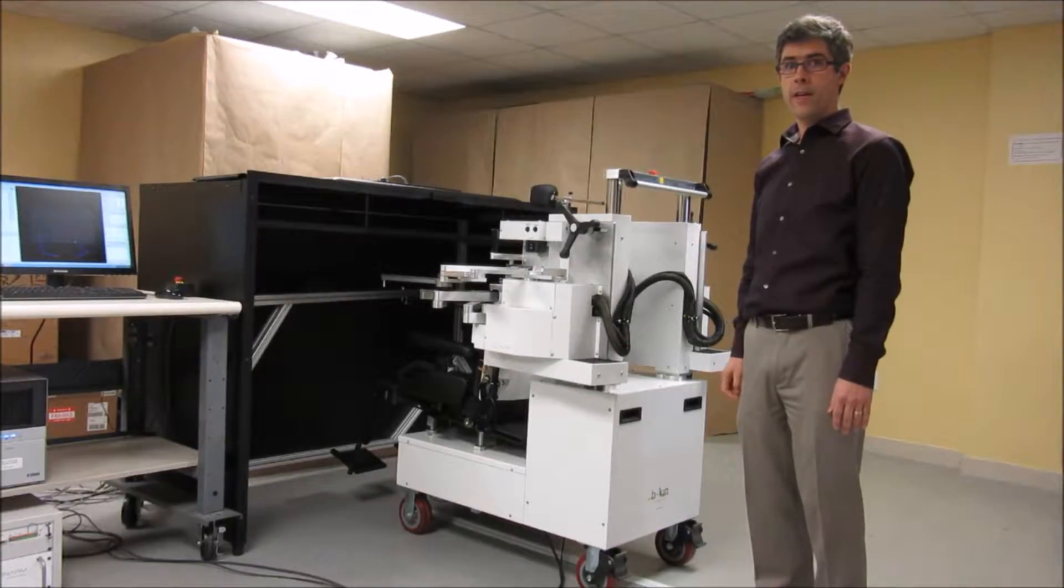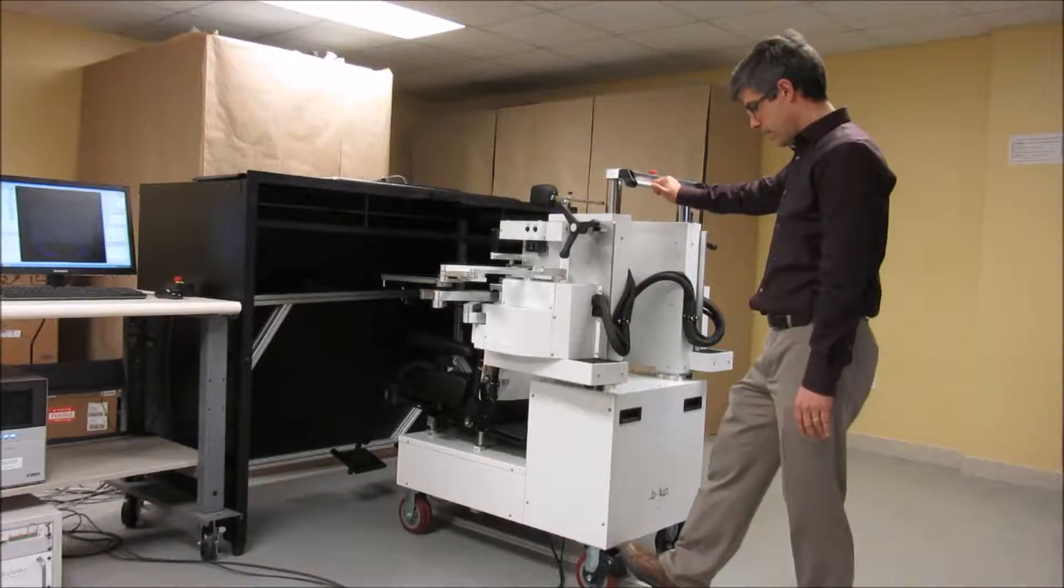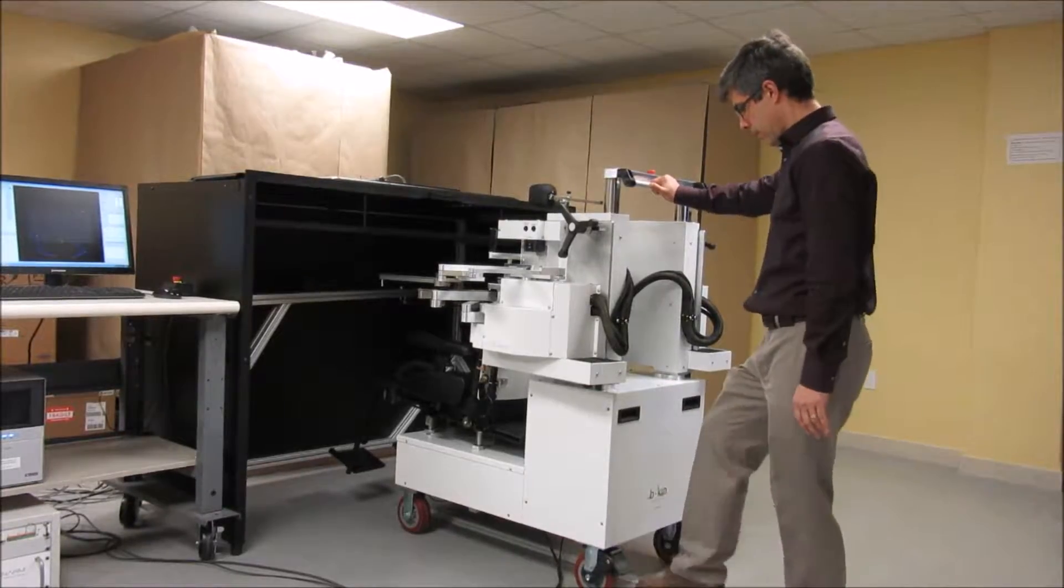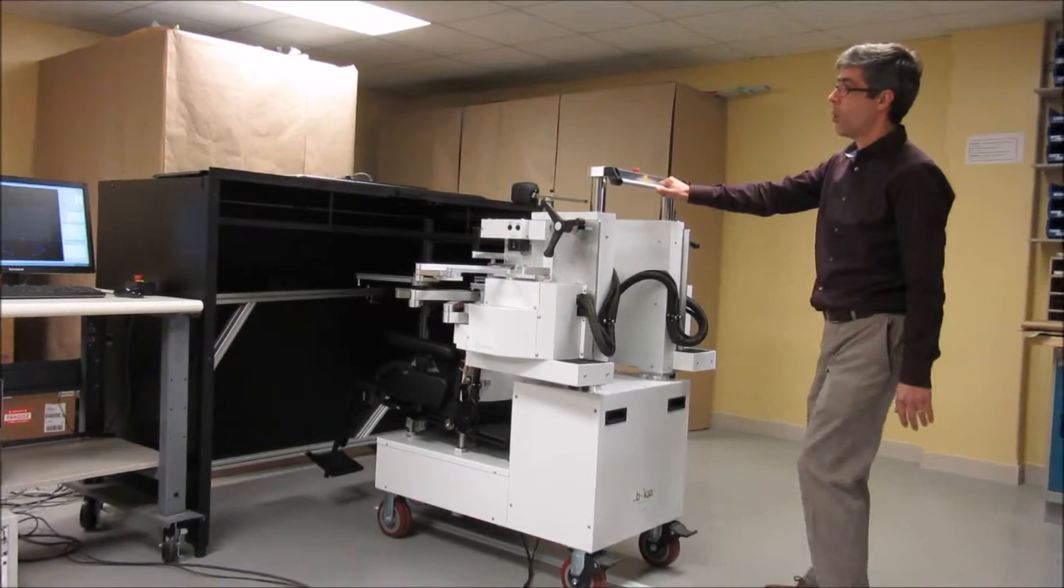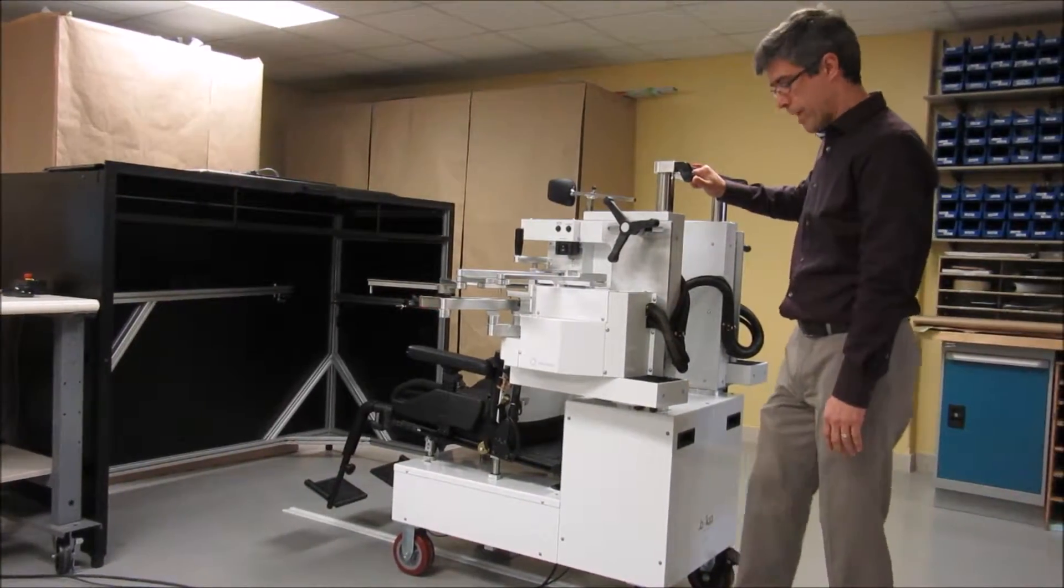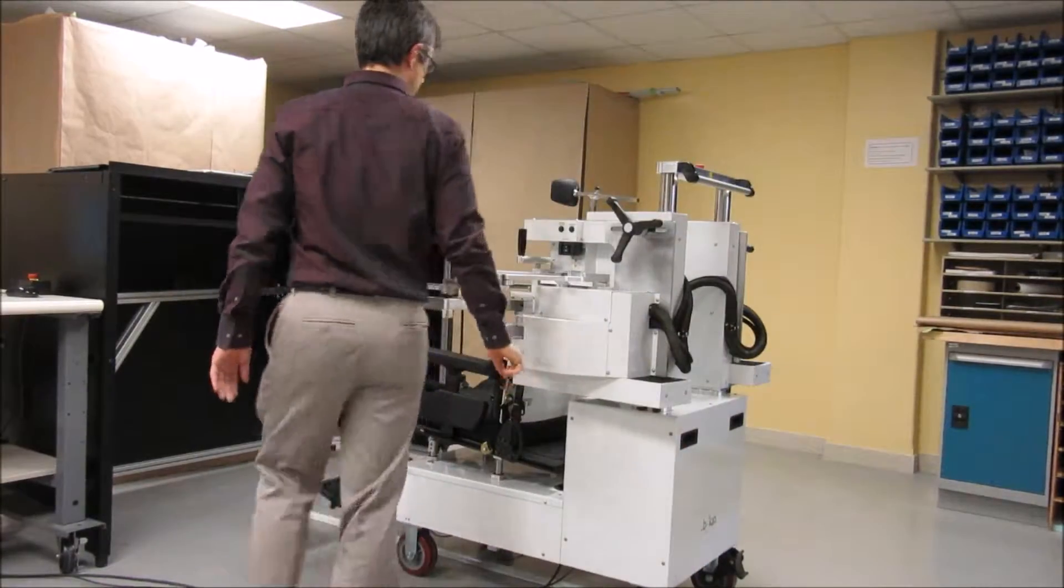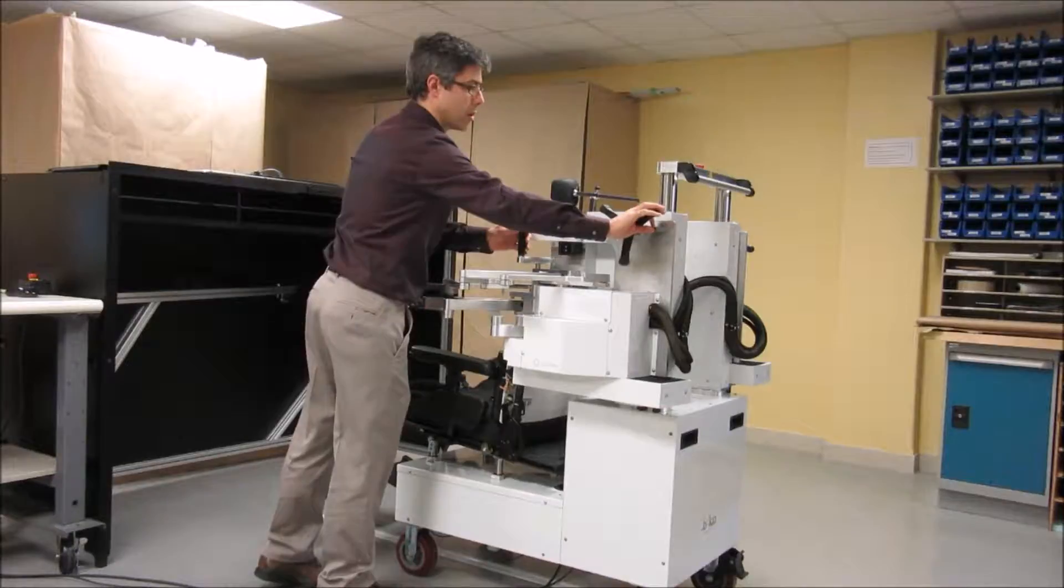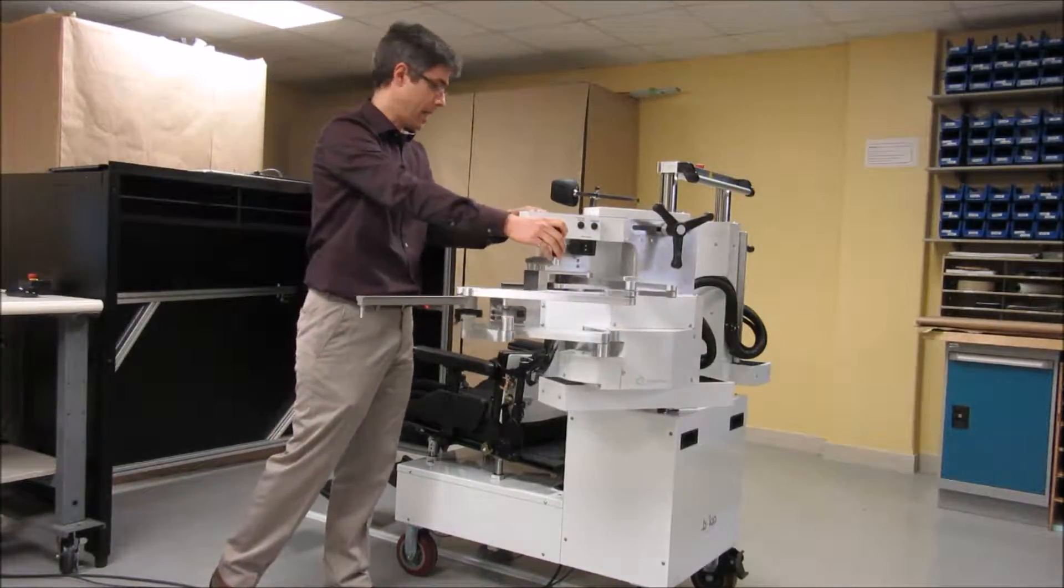This video clip shows how to set up the Kinarm chair for a subject. First step is to release the brakes on the chair and then pull the chair away from the virtual reality. Be sure to put the brakes back on before moving around, loosening the handles so that you can swing at least one of the robots out of the way.